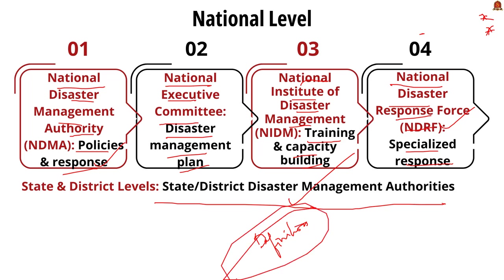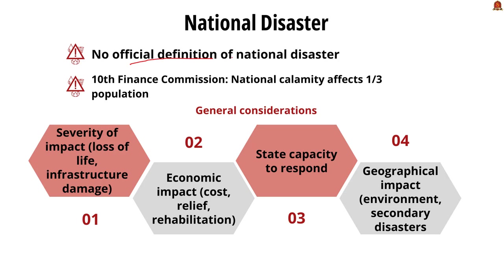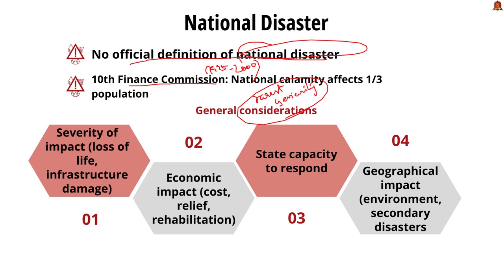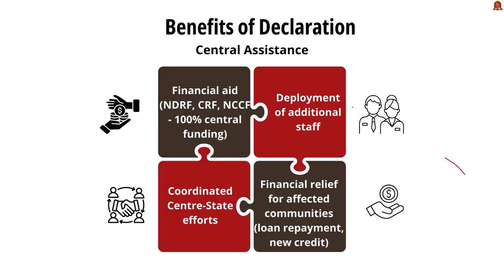Importantly, there is no legal provision to declare a disaster as a national disaster. The 10th Finance Commission (1995–2000) defined a national calamity as one of rarest severity affecting one-third of the population, but did not define 'rarest severity.' General considerations include: severity of impact such as loss of life and infrastructure damage; economic impact like cost of damage, relief, and rehabilitation; capacity of the state to respond; and geographical impact including environmental damage and risk of secondary disasters like landslides.